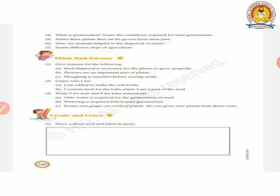Give reason for the following. Seed dispersal is necessary for the plants to grow properly. Seed dispersal, why important? When all the seeds fall and start growing beneath the parent plant, they will be overcrowded and will not be able to get proper sunlight, water and other nutrients. So seeds must be spread or scattered over a wide area to grow properly.